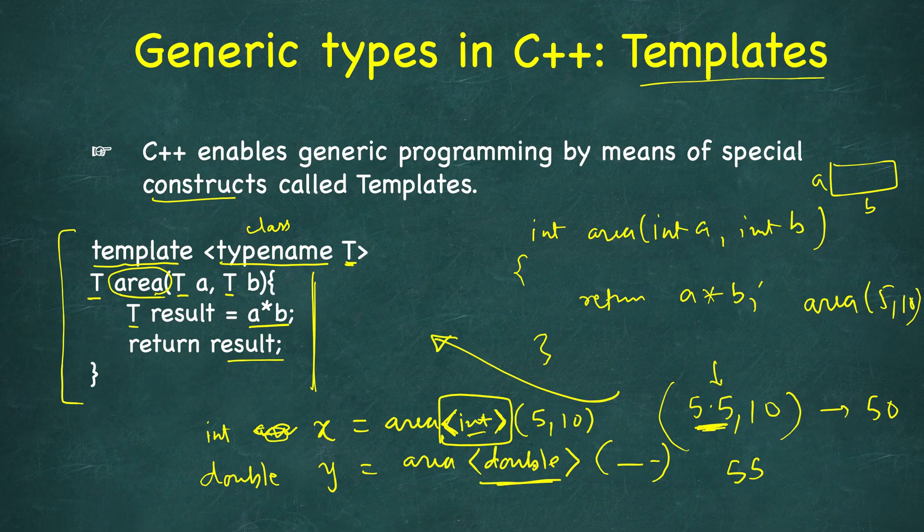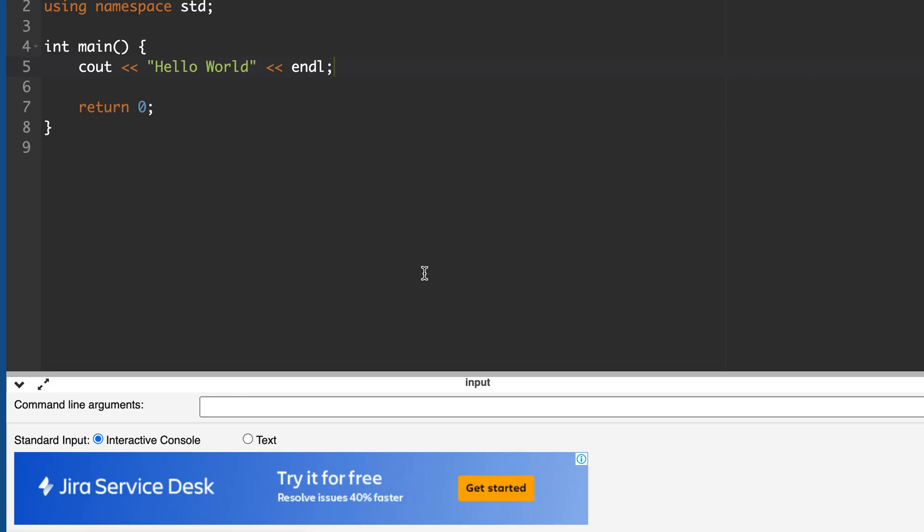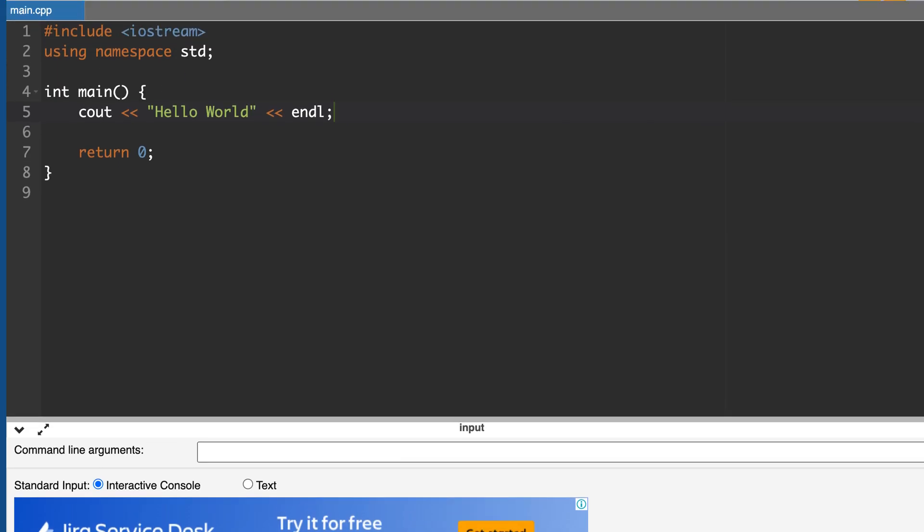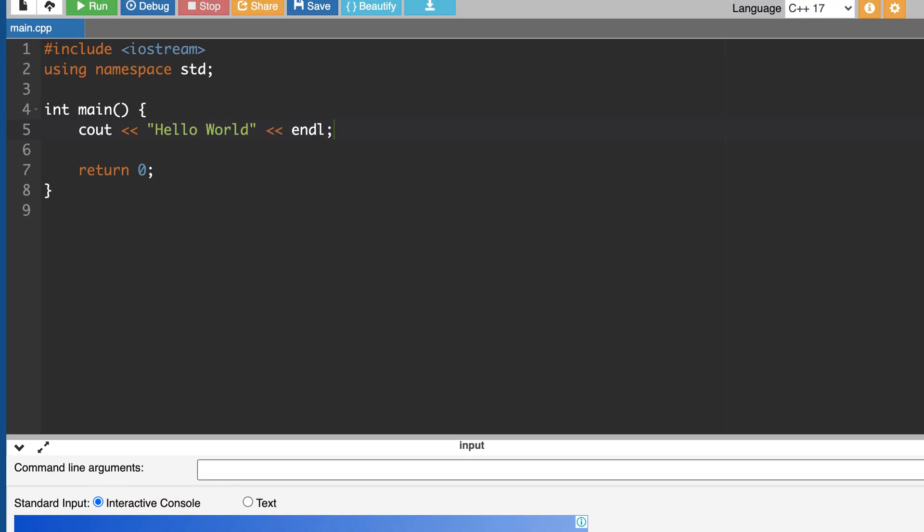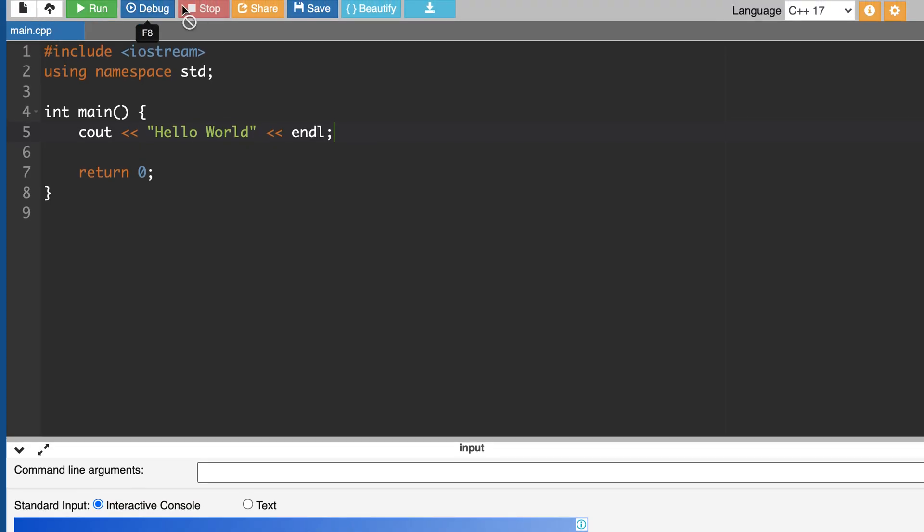So let's first write this code in online GDB that I talked about, and then we will move on to see what are the different components of STL in C++. Here I have opened this online GDB and this is a sample program hello world. You can see that it has all the run, debug and other facilities.